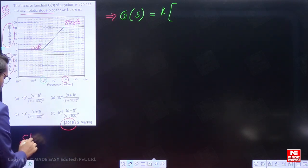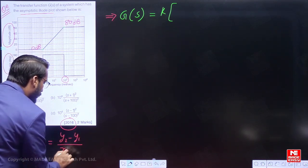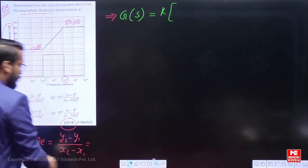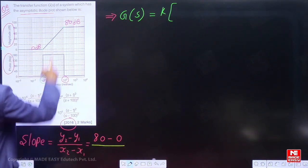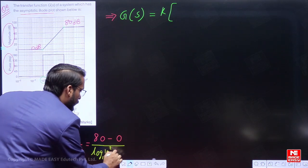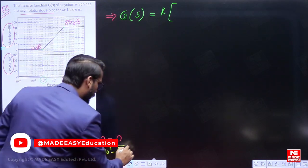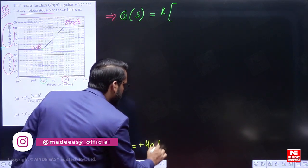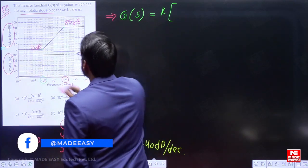The slope was equal to (y2 - y1) / (x2 - x1), which is (80 - 0) dB divided by (log₁₀(10²) - log₁₀(10⁰)). This equals +40 dB per decade, which means 2 zeros.